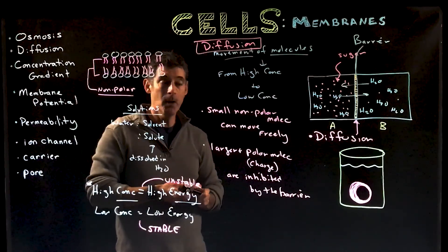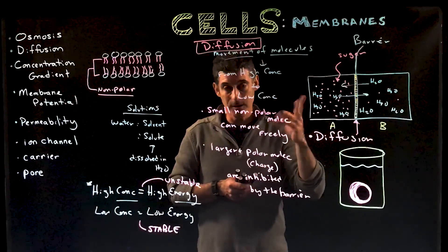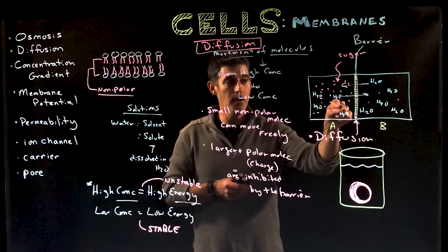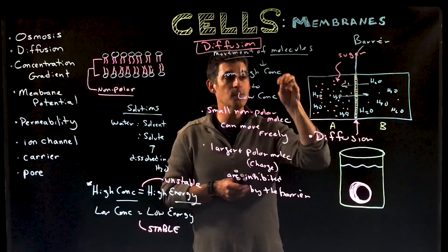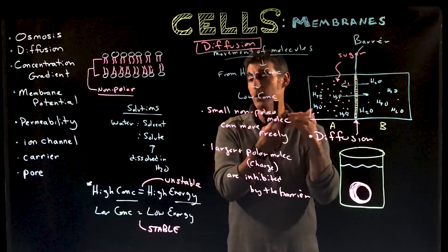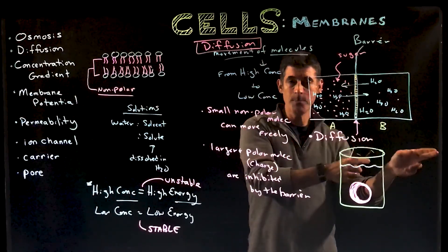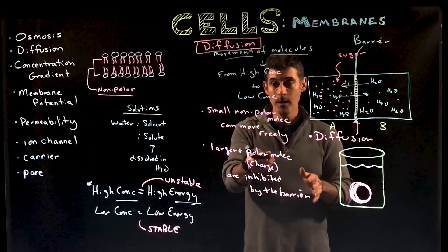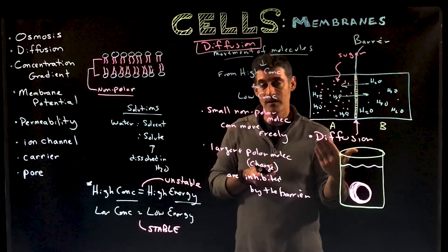In this example, the sugar molecules are on one side in high concentration — this is the high energy, unstable side. They're going to want to diffuse from side A to side B. However, they may not be able to do this because they are polar molecules and possibly too large to fit between the phospholipid tails. So they're stuck on one side.